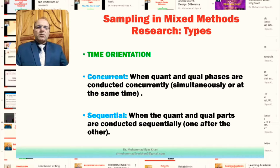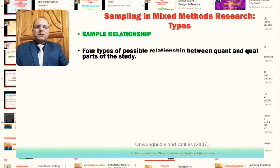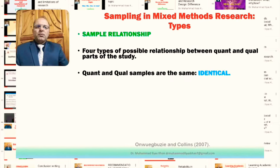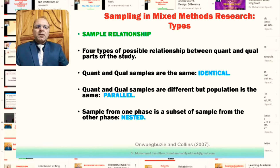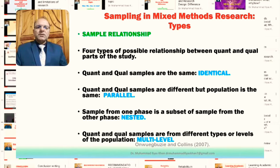In terms of time orientation, we have these two broad categories: the concurrent ones and the sequential ones. In terms of sample relationship, four types have been identified by researchers. One very important categorization is by Onwuegbuzie and Collins, where there is identification of four subtypes. The first is the identical one, where the quantitative and qualitative samples are the same for a particular study — data is collected and analyzed from the same sample for both parts.